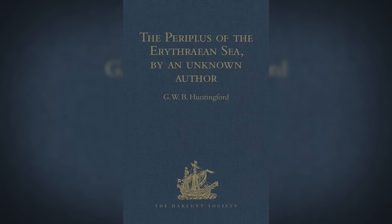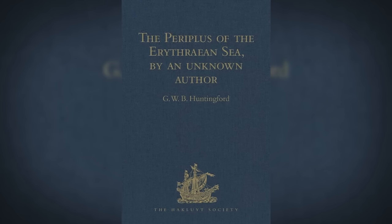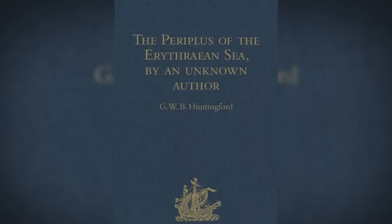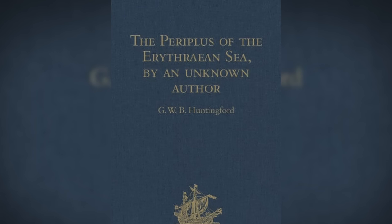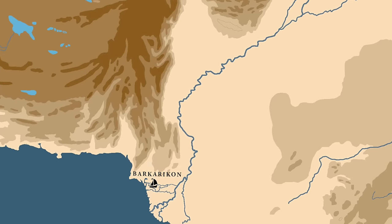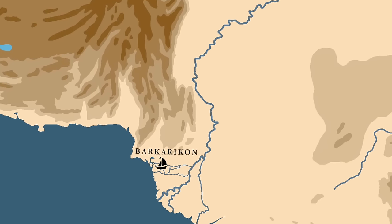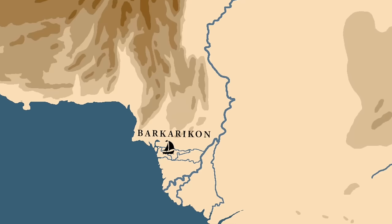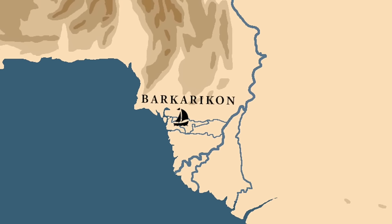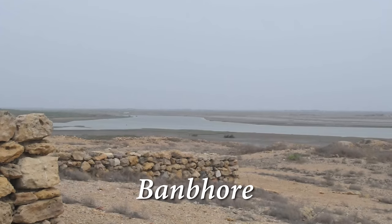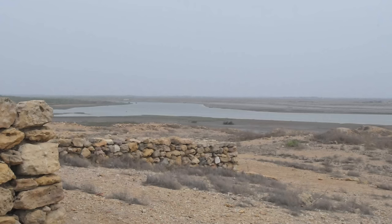This transition can be observed in the Periplus of the Erythrean Sea, a text dated to around mid-1st century AD, which is a guidebook for merchants mentioning ports along the Red Sea, Horn of Africa, Persian Gulf, Arabian Sea, and Indian Ocean. When talking about the Indus Delta, it mentions a port called Barkari Cone. It is nearly impossible to identify its exact location today as the coastline has changed significantly, but scholars believe it was somewhere close to Banbhor, which is located about 65 kilometers east of Karachi.